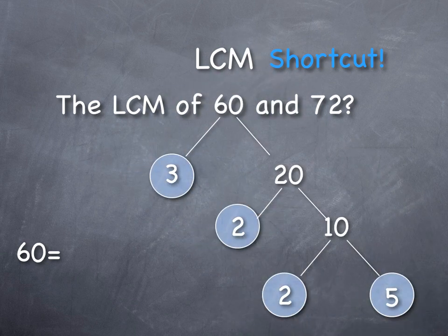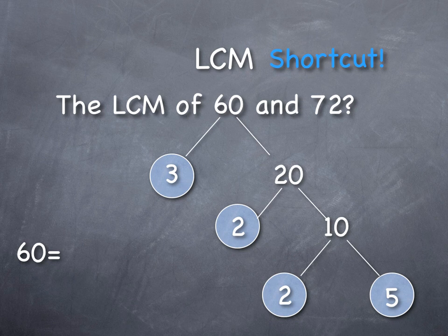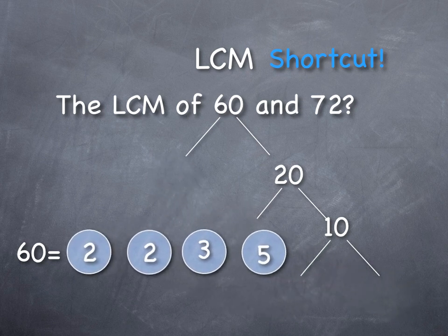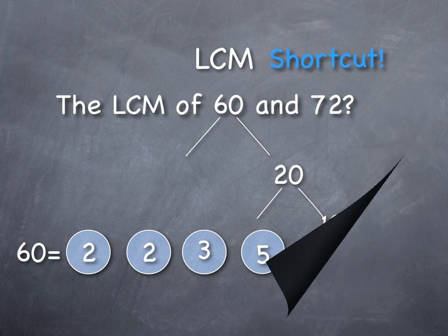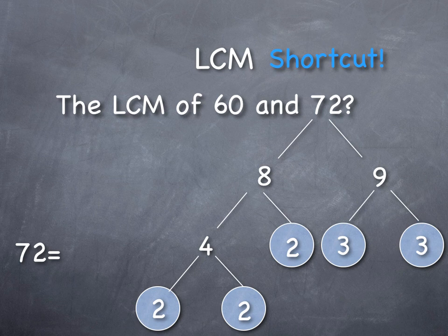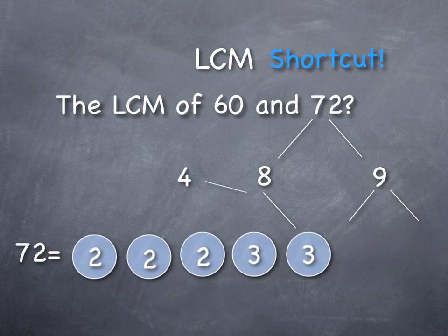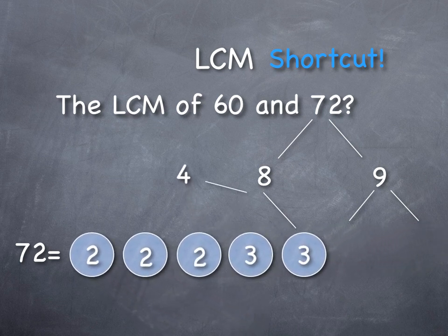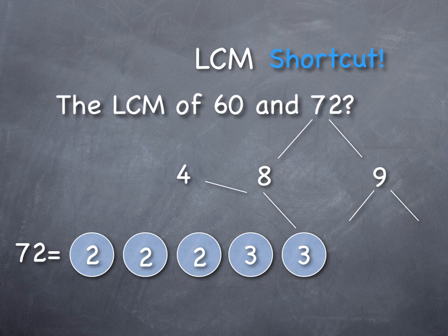So LCM of sixty and seventy-two. Remember, we want to find the product of primes. So we've been doing this, factor-tree it. If we factor-tree out sixty, then the product of primes is going to be two times two times three times five, or two to the power of two times three times five. And if we factor-tree out seventy-two, there we go, two times two times two times three times three.